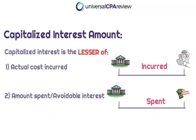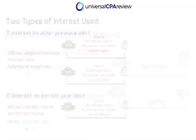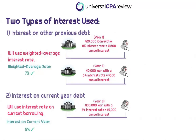There are two types of interest costs associated with the capitalization of interest: interest expense incurred and what's referred to as avoidable interest. There are two types of debts you need to be aware of. The first type is previous debt — interest on other debts not specified for this PP&E construction project — things like bonds and notes payable sitting on our books. This debt is important because it is the only debt not specified for the construction project, and it is this type of debt to which we will apply the weighted average interest rate.